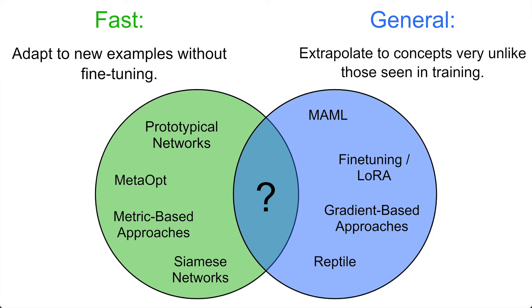Previous few-shot methods typically fall into one of two categories. Metric-based approaches are often extremely fast — they can classify unlabeled examples within a single forward pass — but struggle when the meta-training distribution departs from the testing distribution. Using our previous example, if the training set predominantly consists of classification by object, these approaches often struggle when the classification paradigm shifts to classification by texture.